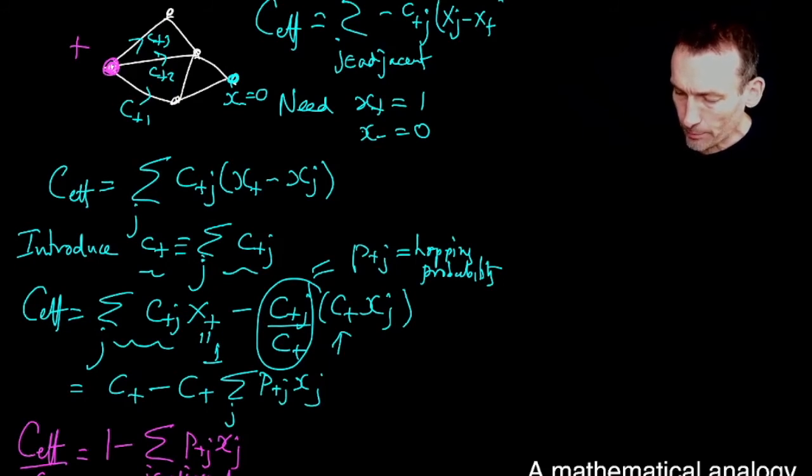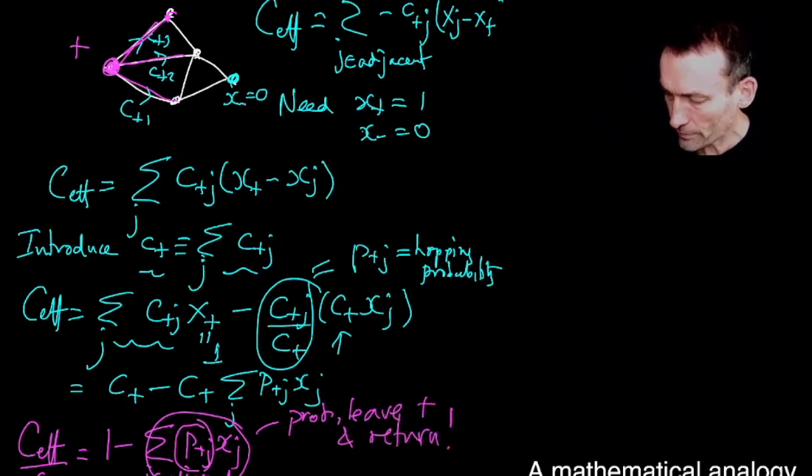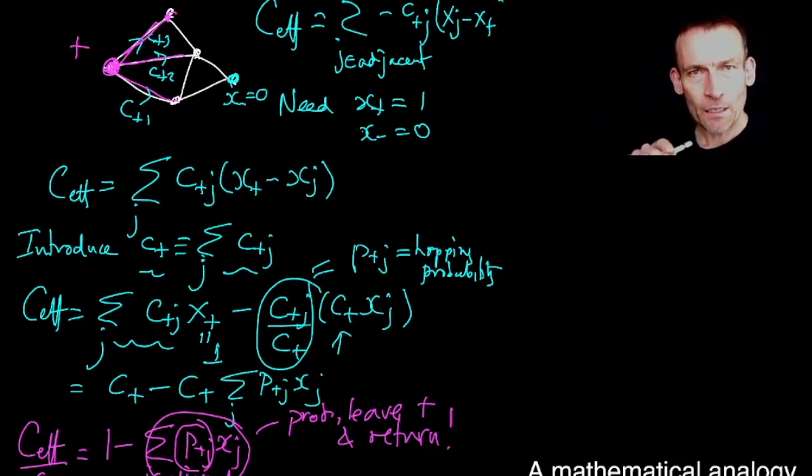And look at what does this mean? With probability, you see, it's the probability, isn't it, that I'm at node p of plus, the plus node. And then p plus j is the probability that I go to this node, or this node, or this node. And then if I go along this node, I then multiply it by xj, which is the probability that I reach the plus node before the minus node. So isn't this the probability, the probability that I leave the plus and return?